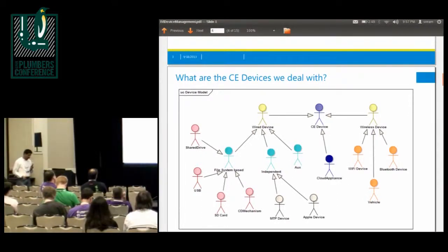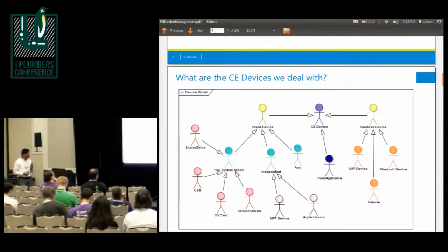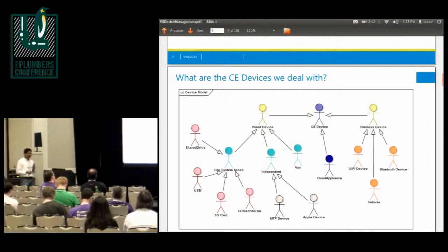There are a whole lot of devices that we deal with — wired and wireless. We have independent devices like smartphones or smart devices. Then we also have USBs and SD cards which do not really have any processing power by themselves. CD drives are still being used in several vehicles, believe it or not. So we still have to deal with them, and then there are wireless devices.